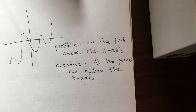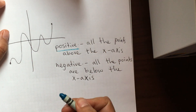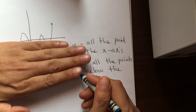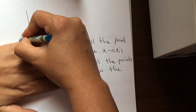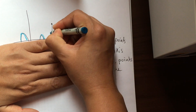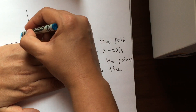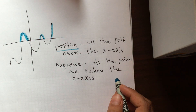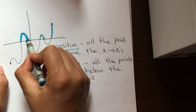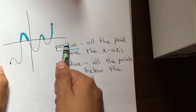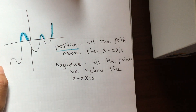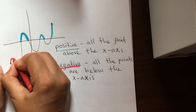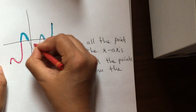If I ask you to locate where the graph is positive, all you have to do is cover the part that is negative and just color in where the graph is positive. This can also be done by writing an equation, but today we're just going to locate it. The graph is positive in all of these sections and negative in all the points that are below the x-axis.